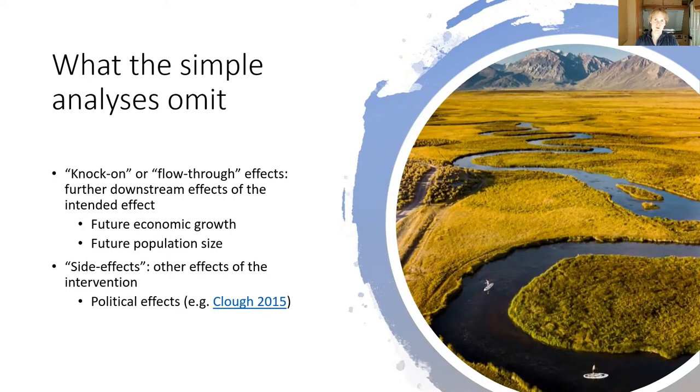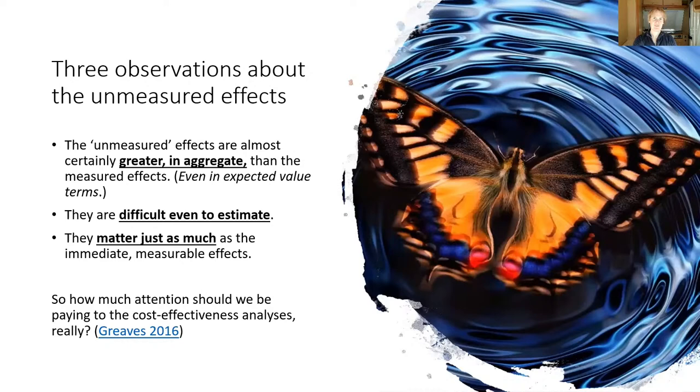So in terms of this picture, if you like, the paddle borders in the foreground represent the intended effect. You can have some effect on that part of the river immediately. That's the bit that we're measuring in our simple cost-effectiveness analysis. But in principle, in both the cases of knock-on effects and in the cases of side effects, there are also effects further on into the distant parts of that river and even over there in the distant mountains that we can only dimly see.